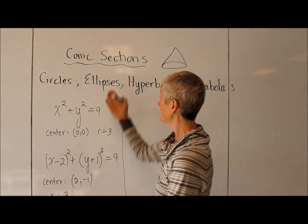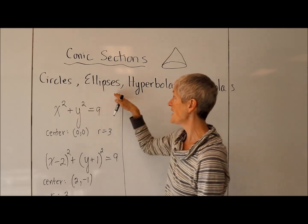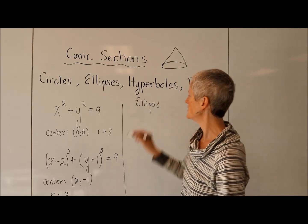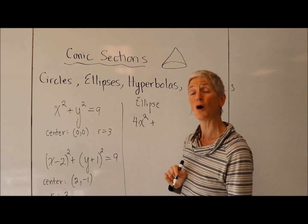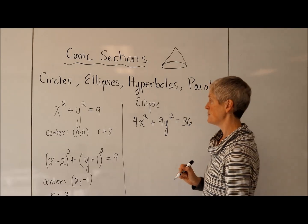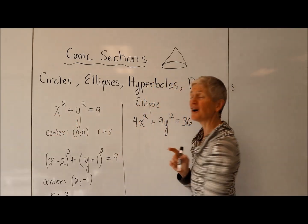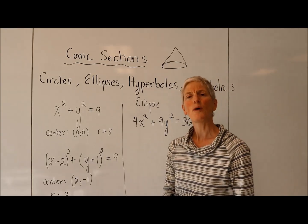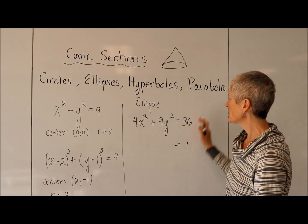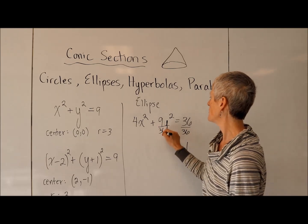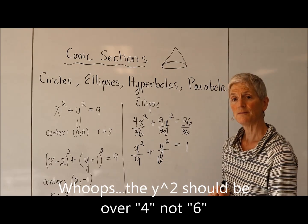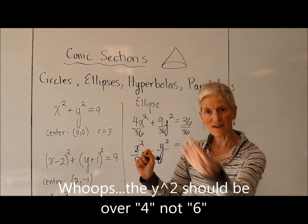An ellipse is similar to a circle in terms of the structure of the equation. In fact, we can consider a circle a special ellipse. But an ellipse typically has coefficients of the squared terms that are different from each other. So let's say I had 4X squared plus 9Y squared equals 36. That would be an ellipse because the coefficients of my squared terms, unlike in a circle, are different from each other. Typically the way that we analyze an ellipse is it's easiest if this number over here is equal to 1. So I'm going to divide everything by 36, which gives me X squared over 9 plus Y squared over 4 equals 1. Now I am ready to sketch a graph of this ellipse.